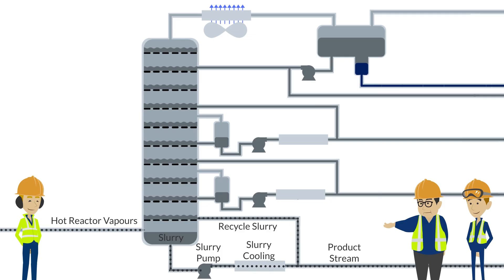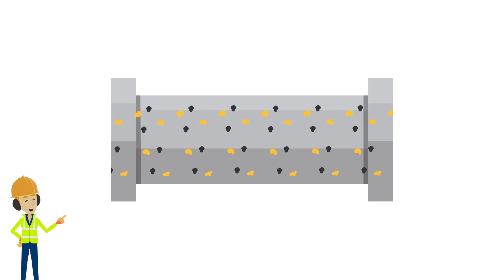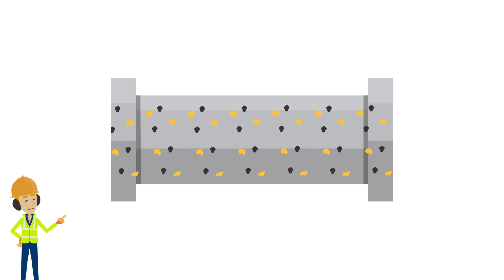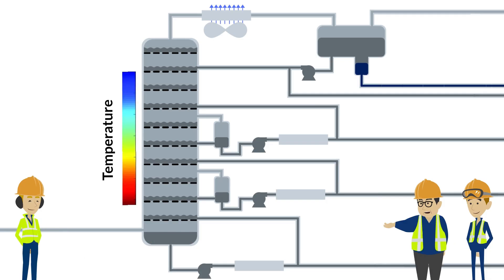Why is it called a slurry product? It contains a significant amount of solids which drop out in the bottom of the tower with the heaviest hydrocarbons. The solids consist of catalyst particles, coke, and solid hydrocarbons. The temperature of the tower reduces as you go higher up.